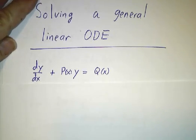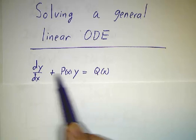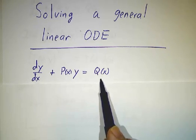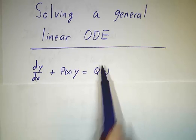That is, an equation of the form derivative of y plus some function of x times y equals some other function of x. And we're going to do this in total generality.